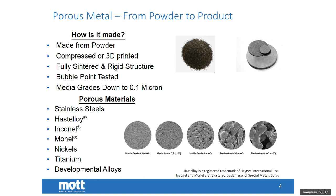As for materials, far and away the most common porous metal material in our industry is stainless steel, though there are also porous metal bronze and brass products. We also have specialty alloys such as Hastelloy, Inconel, Monel, various other nickel alloys, titaniums, and some developmental alloys. The summary is that there's a suitable material choice for each application — learning about the application allows you to make an intelligent material choice.